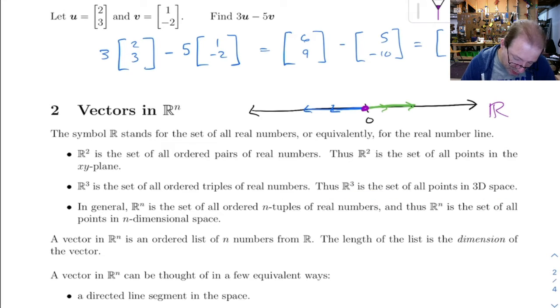In general, you can think of R^n as being the set of all ordered n-tuples of real numbers, and you can also think of it as being the set of all points in an n-dimensional space.